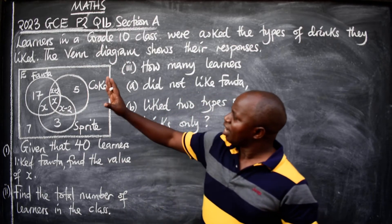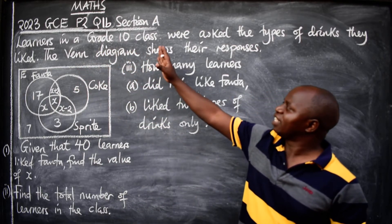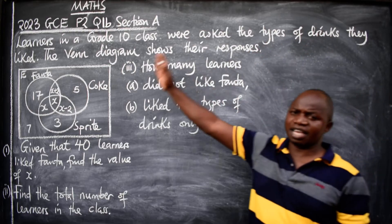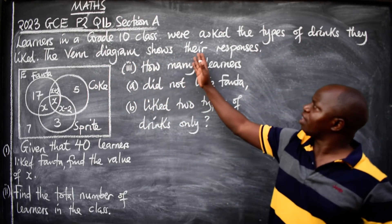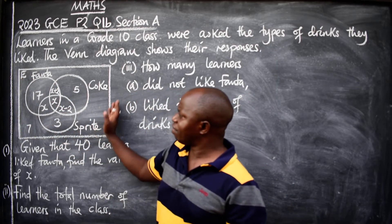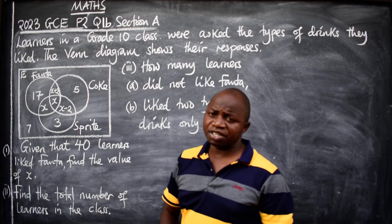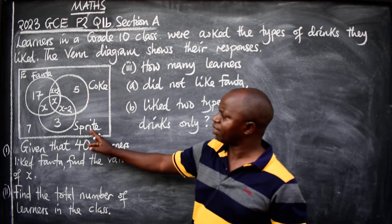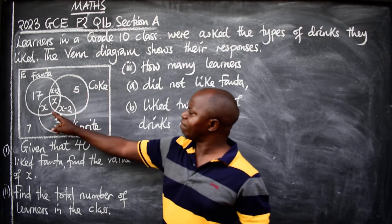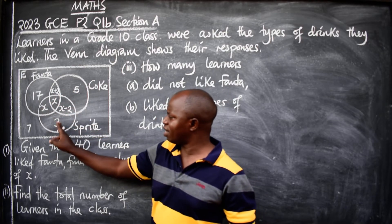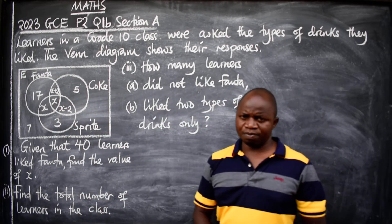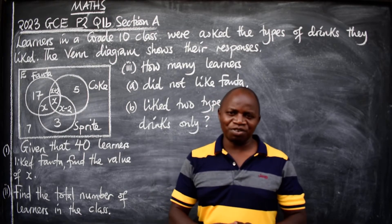Learners in a certain class were asked the types of drinks they liked. The Venn diagram shows their responses. We have the universal set for everything and three drinks: Fanta, Coke, and Sprite. The values shown are 17, x plus 2, 5, x, x minus 2, x, 3, and 7.